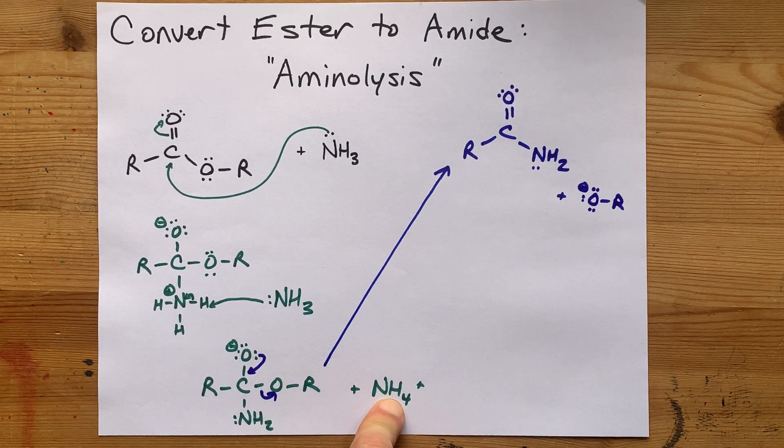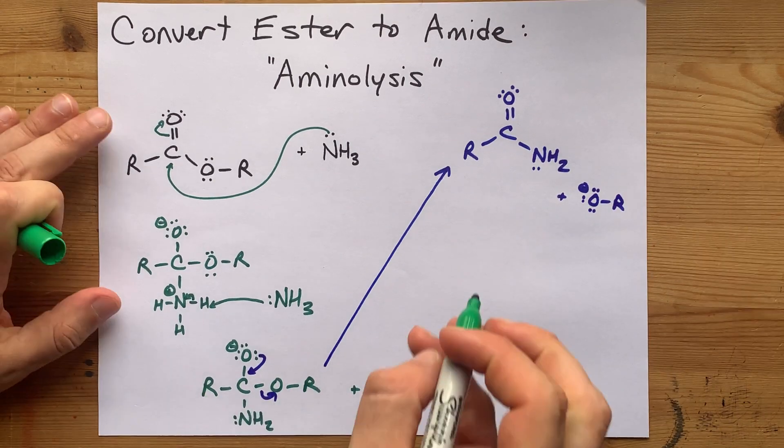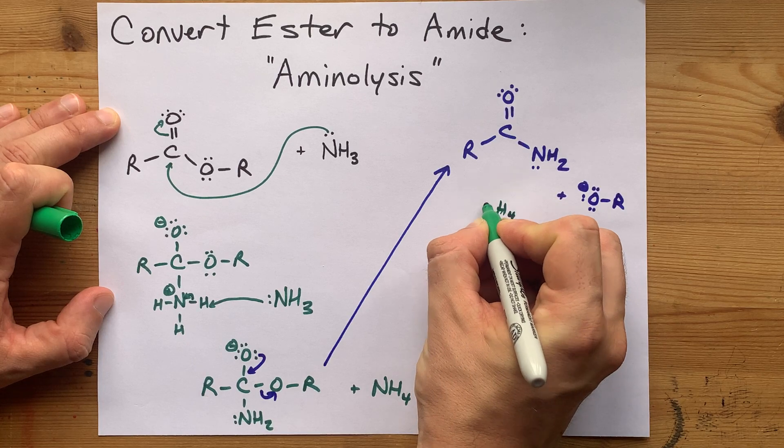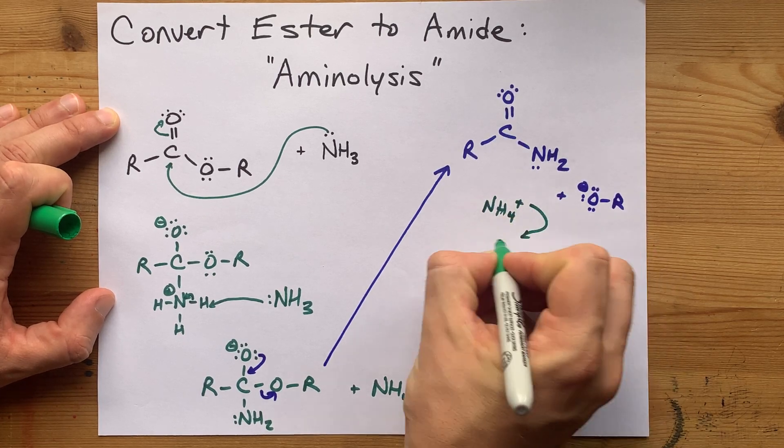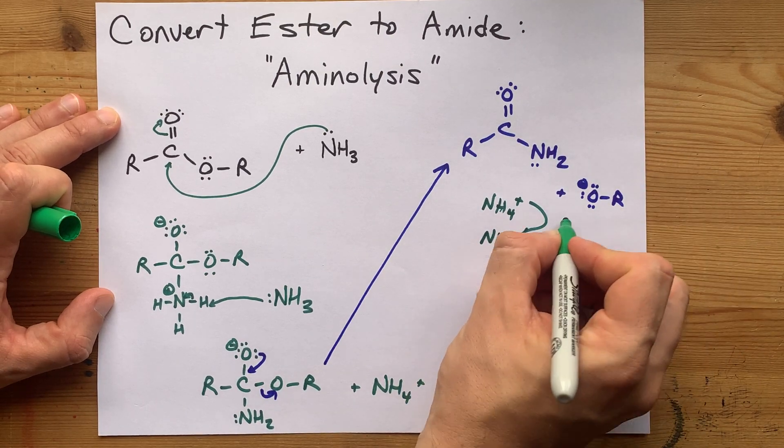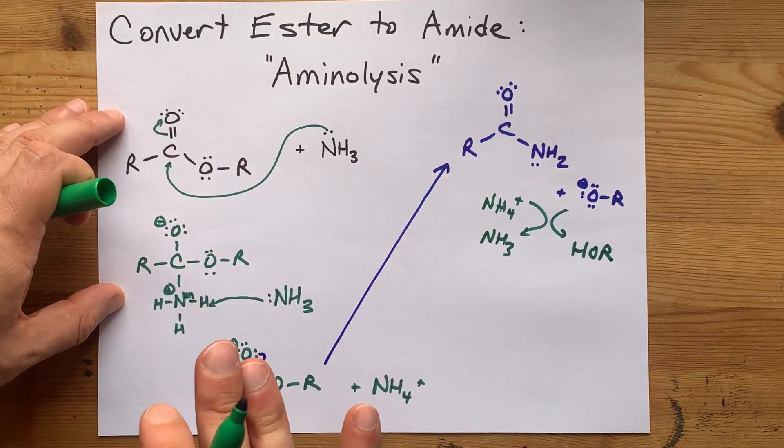Now, the NH4+ is a weak acid. This is a strong base, an alkoxy ion. And so the NH4+ becomes NH3 by giving away H right back to there. It becomes HOR, and you've broken apart your ester.